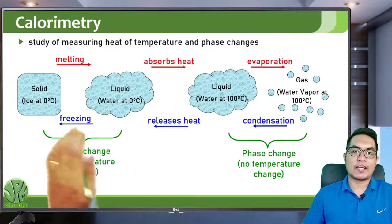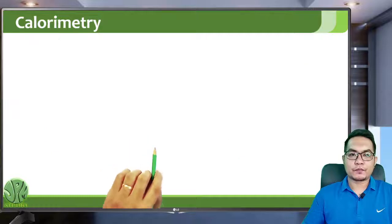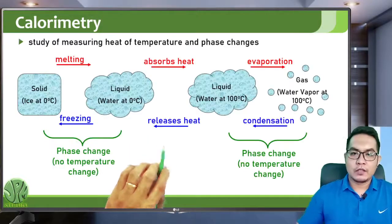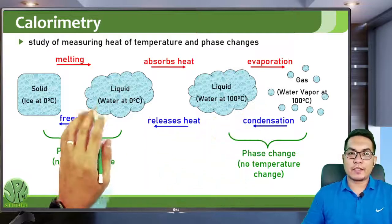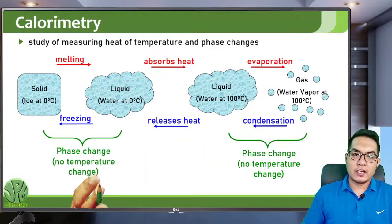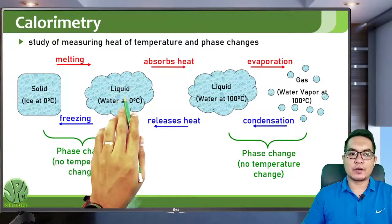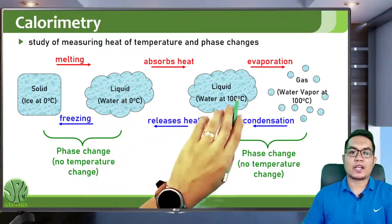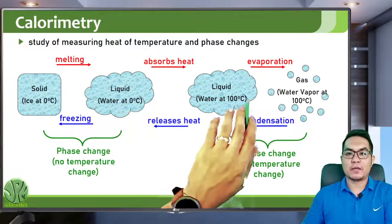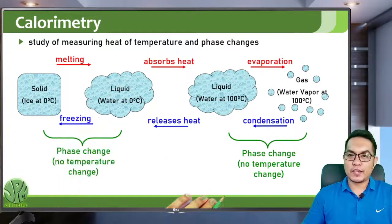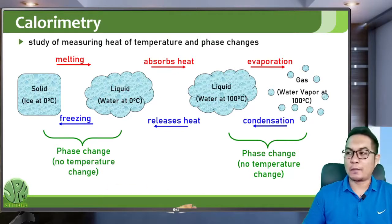So from liquid to solid it's freezing; solid to liquid that's melting. At the boiling point and at the freezing point there are actually no temperature changes. In the region from zero degrees Celsius to 100 degrees Celsius there is a temperature change, but at the boiling point and at the freezing point there is only a phase change — no temperature change happening.